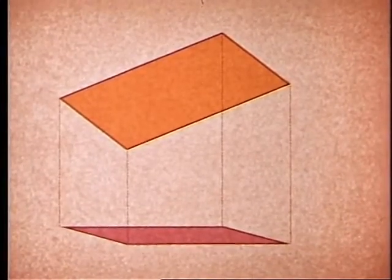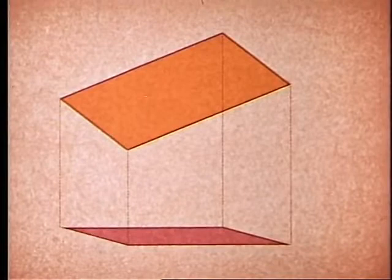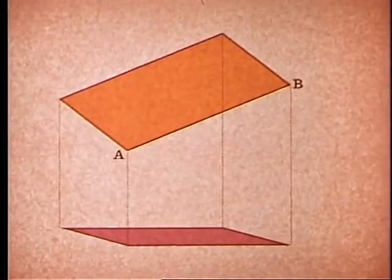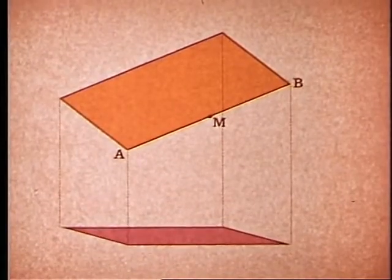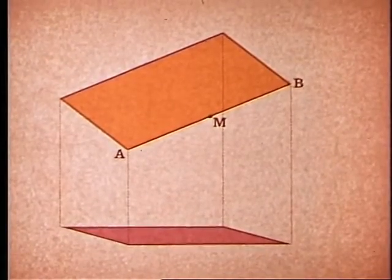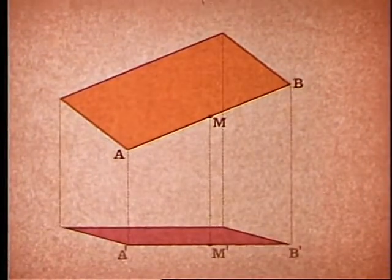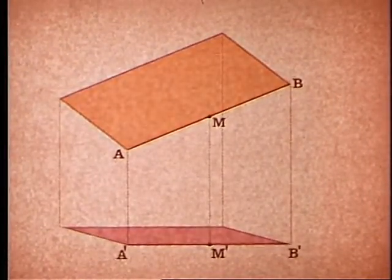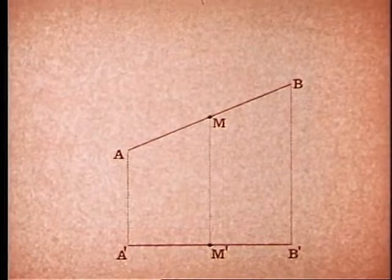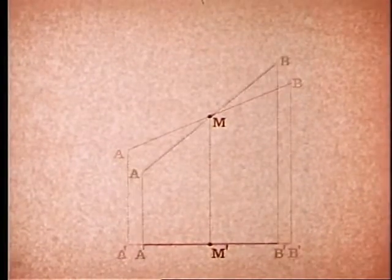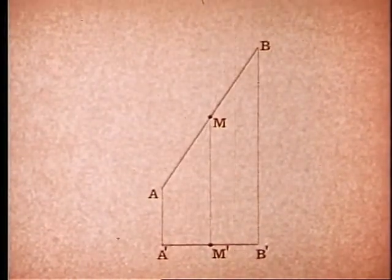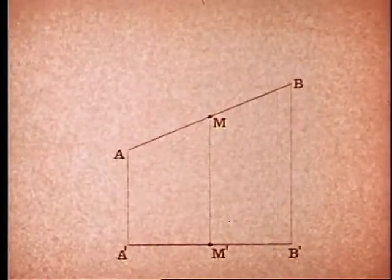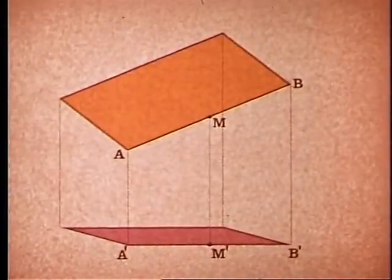Let us call the endpoints of one edge of the rectangle A and B. Let M be the midpoint of the edge. If the projections of these points are A', B', and M' respectively, we see at once — and indeed it can be proved — that M' is the midpoint of the segment A'B'. We say then that midpoints project into midpoints.